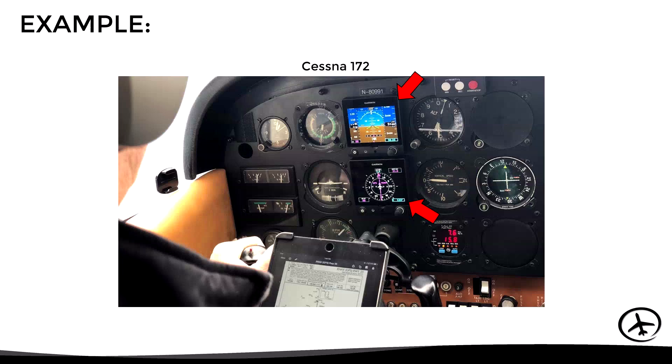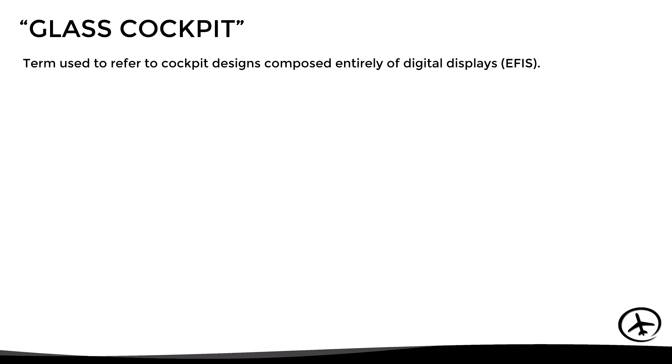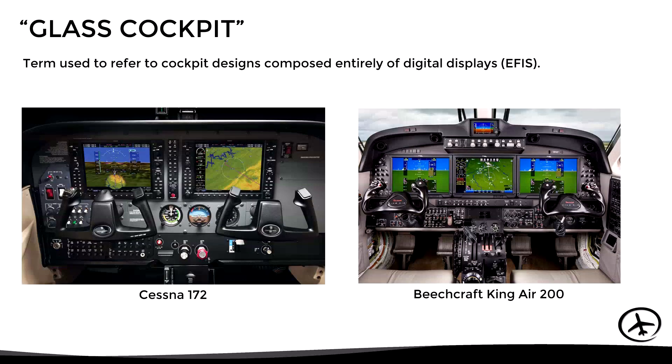So far we have seen the partial implementation of the EFIS system in the flight instruments. However, when we talk about a complete EFIS system, we use the term glass cockpit. This term refers to cockpit designs composed entirely of digital displays. On the left we have the Garmin G1000 system installed on a Cessna 172, while on the right side we have the ProLine 21 system installed on a Beechcraft King Air.